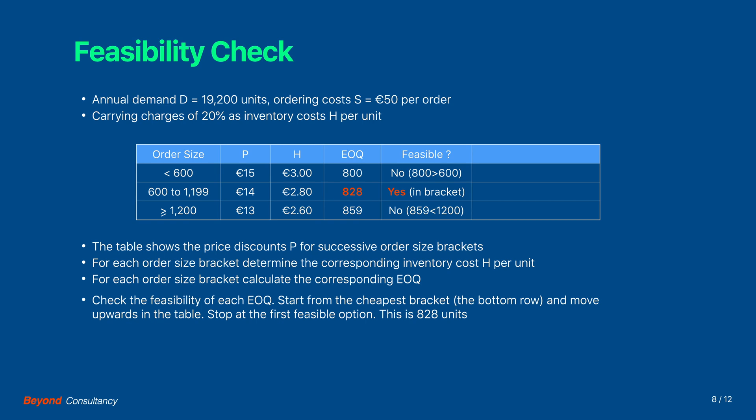We need to check the feasibility of each economic order quantity. The general procedure is to start from the cheapest bracket — the bottom row — to move upwards in the table and to stop at the first feasible option. For the bottom row, the economic order quantity is 859; however, the price of 13 Euro is only applicable for an order size equal to 1200 units or more. The 859 is thus not feasible, so we move to the next row. Here the optimal quantity is 828, which falls within the order size range and is thus a feasible option. According to the QDM, we stop the search as this is the cheapest option thus far.